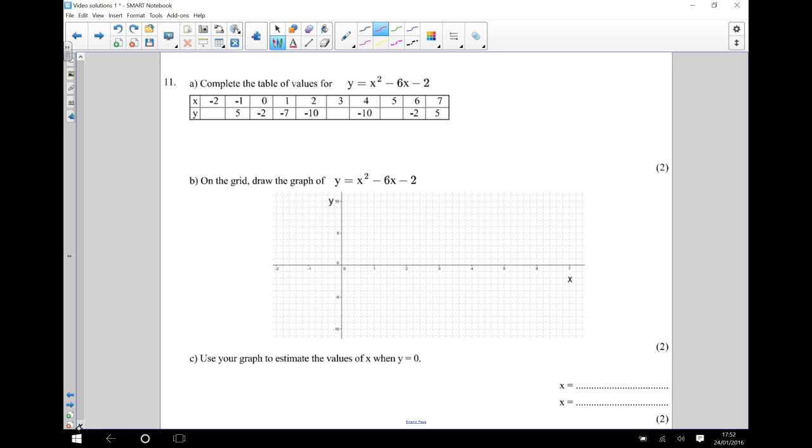Hi, in this question we need to complete a table of values for this equation here. y is equal to x squared take away 6x take away 2, which is saying that the y coordinate is equal to the x coordinate squared take away 6 times the x coordinate take away 2.